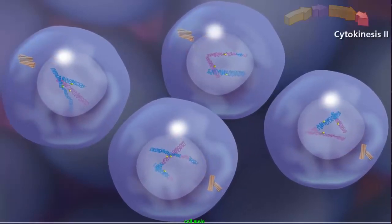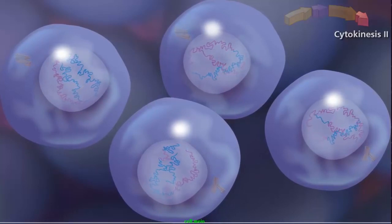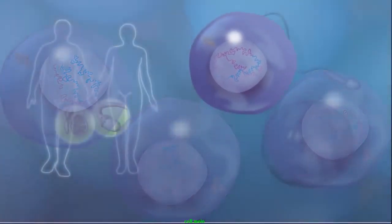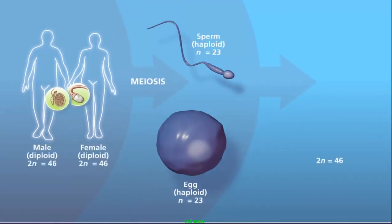The entire process ends with telophase II, as the chromosomes decondense and the nuclear envelope reforms. Cytokinesis occurs, and cleavage furrows separate the two daughter cells into four haploid daughter cells. The haploid daughter cells will specialize into gametes, either sperm or egg. These fuse in fertilization to form a zygote, which will grow into a child.